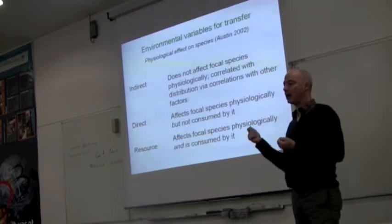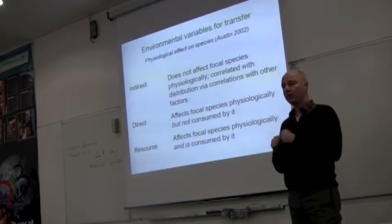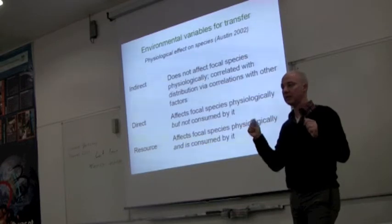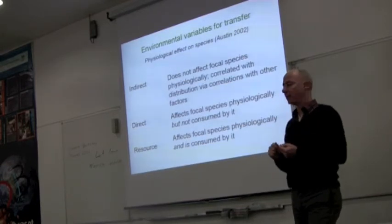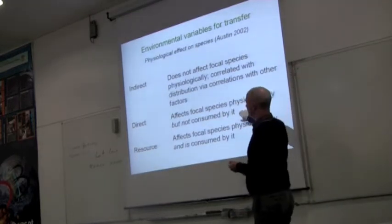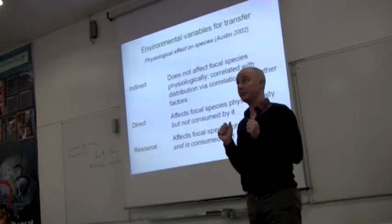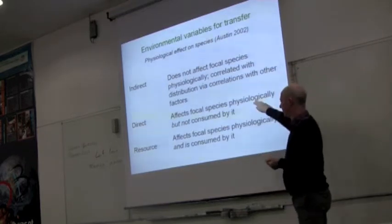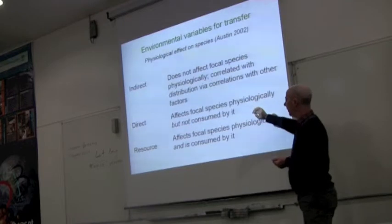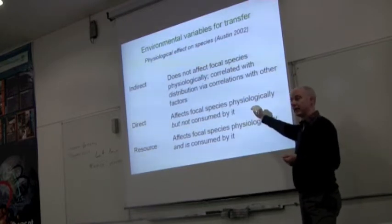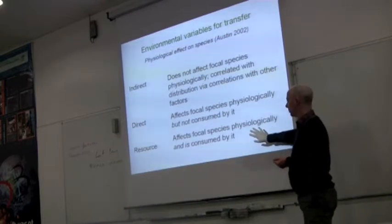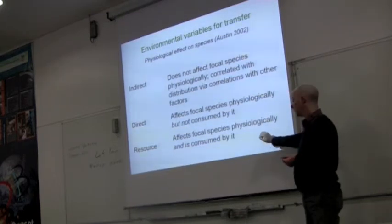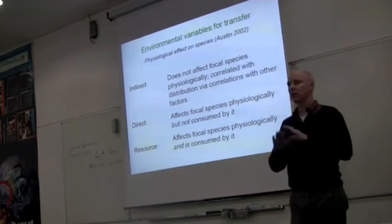Austin also had another classification independent of the first: indirect, direct, and resource. An indirect variable does not affect the species physiologically, whereas the other two do. An indirect variable is correlated with the distribution of our species because of correlations it has with other factors. Direct variables affect the species physiologically but are not consumed by the species. Resource variables affect the species physiologically and are consumed by it.